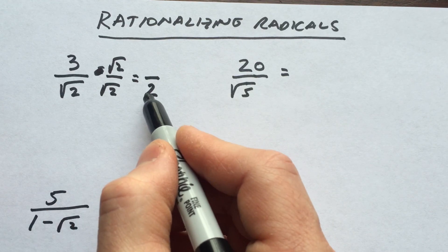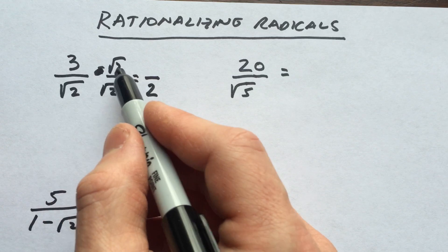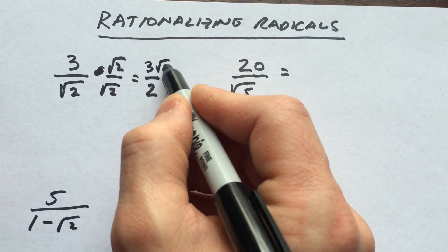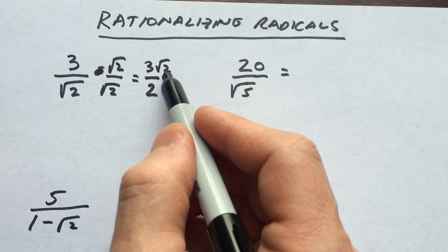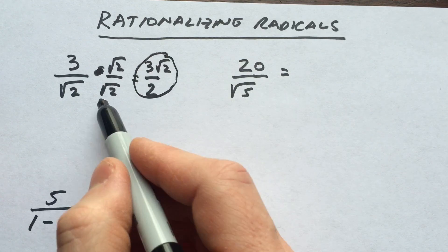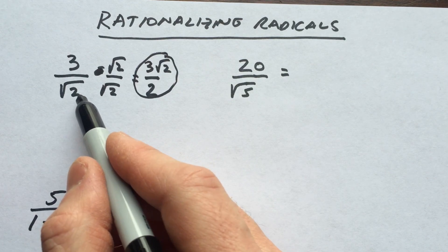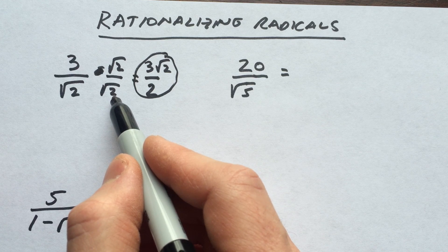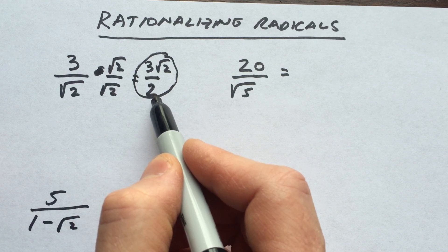So you can see we've gotten rid of the radical in the denominator. In the numerator we have 3 times the square root of 2, which is just 3√2. Again, our goal was to get rid of the radical in the denominator. We multiply by √2, and that gave us just an integer 2.